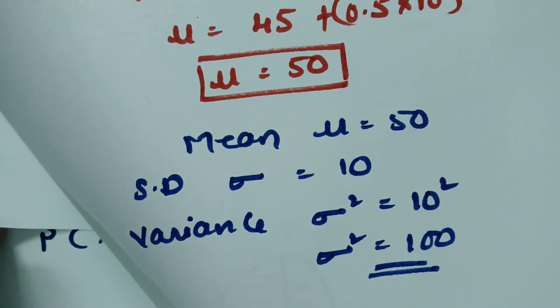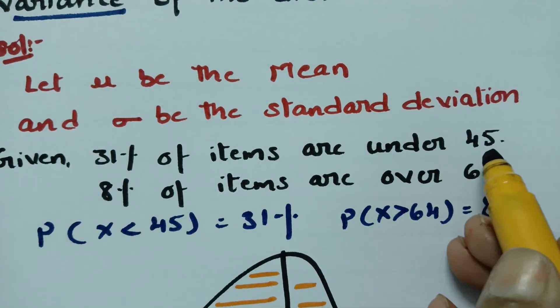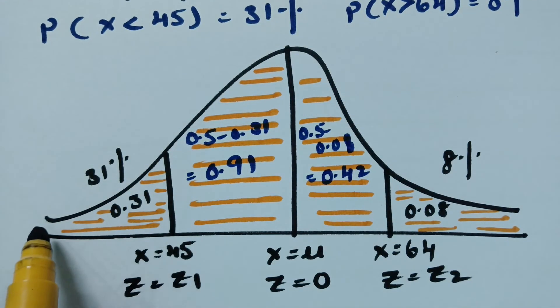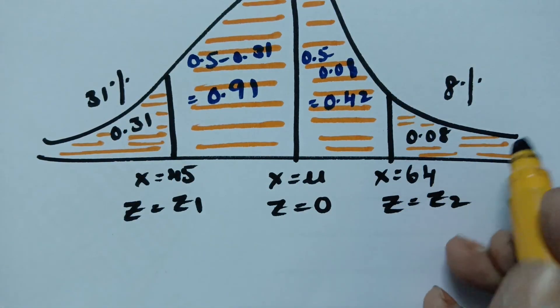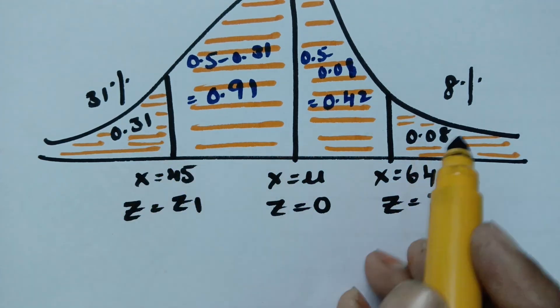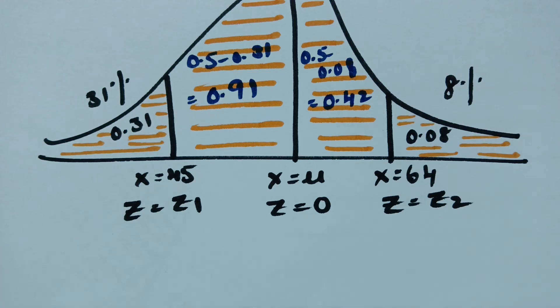This is how we solve the problem. Under 45 means plot towards the left side of the ordinate; over 64 means plot towards the right side. Using the table and solving the two equations, we get mu = 50 and variance = 100. Thank you for watching — I will be uploading more problems in this series. Please practice, share with friends, and subscribe to the channel.